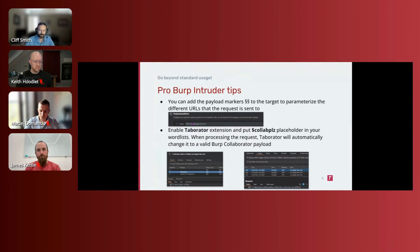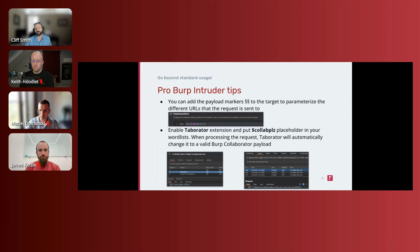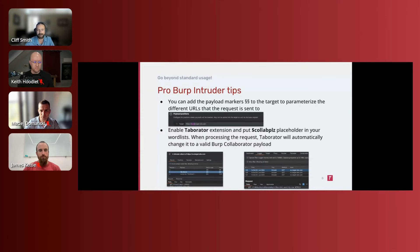Burp Intruder is one of the most important tools for narrowing the gap between having an idea and actually generating the requests to test it. A few non-obvious tips: the payload markers — the section symbol — can go in the URL itself, potentially even changing the hostname. The Taborator extension gives you a tab-based interface to Burp Collaborator, and one less-obvious feature is the special '$collab$' placeholder payload you can inject into your word lists to have a Collaborator payload inserted automatically.